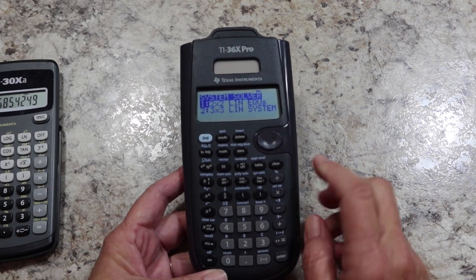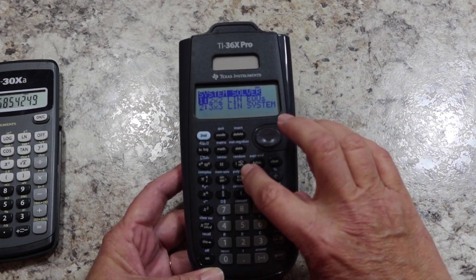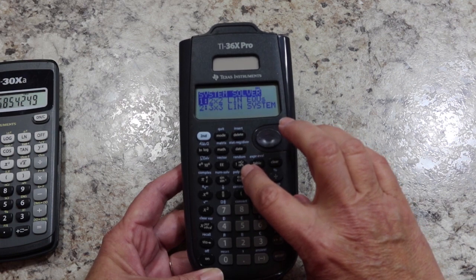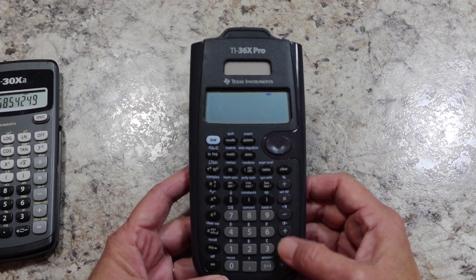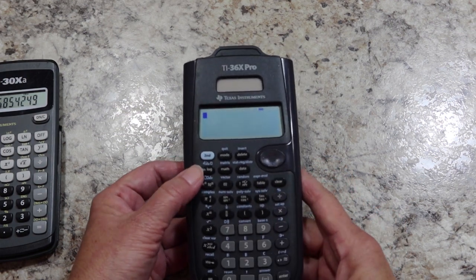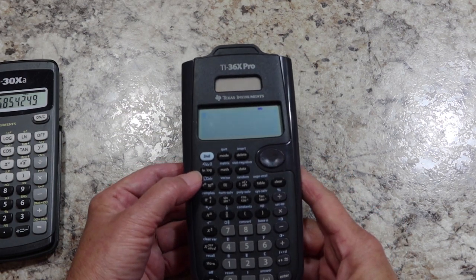It will also solve systems of equations where you have two equations at one time. And that's just the beginning. There's a dedicated button for permutations and combinations, factorials. Another thing that this one does, I really love, and it's hidden. This is one of those things where you have to know the calculator.